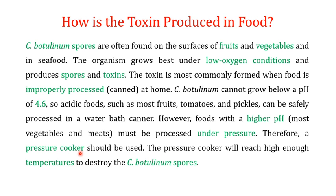The conditions that favor production of the toxin in food are as follows: C. botulinum spores are often found on the surface of fruits and vegetables and in seafoods. In an aerobic environment the spores are not able to produce the toxin. But the organism grows best under low oxygen conditions, and it produces spores and toxins under those conditions.